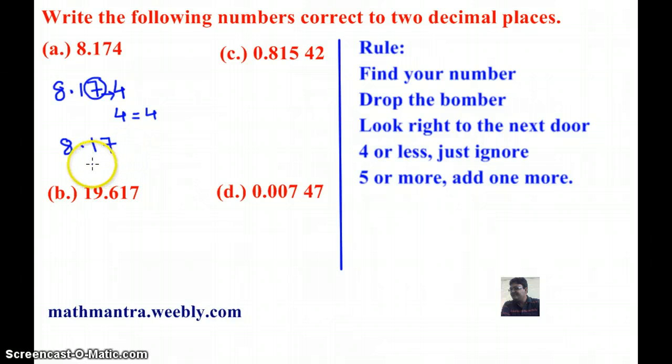Also, note that the answer contains two digits after decimal because we are rewriting the number correct to two decimal places.